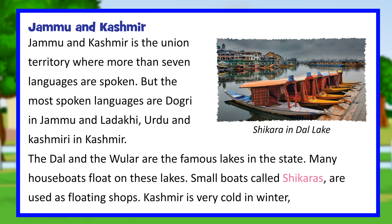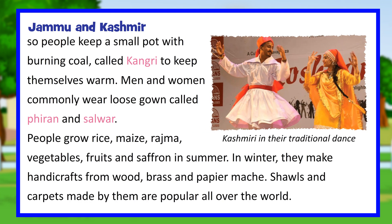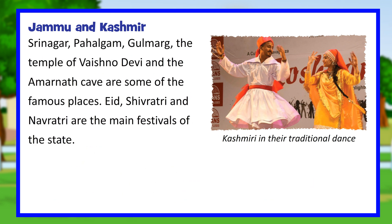The Dal and Wular are famous lakes in Jammu and Kashmir, with many houseboats floating on them. Small boats called Shikaras are used as floating shops. In winter, people keep a small pot with burning coal called a Kangdi to keep warm, and commonly wear a loose gown called a Pheran with salwar. People grow rice, maize, rajma, vegetables, fruits, and saffron in summer, and make handicrafts from wood, brass, and papier-mâché in winter. Shawls and carpets are popular worldwide. Famous places include Srinagar, Pahalgam, Gulmarg, the Vaishno Devi temple, and the Amarnath Cave. Eid, Shivratri, and Navratri are the main festivals.